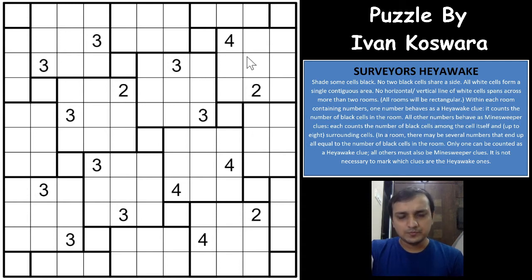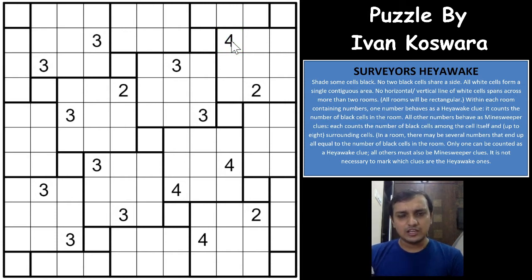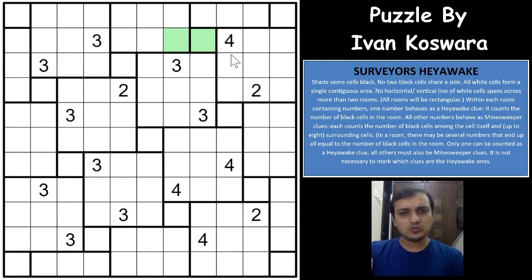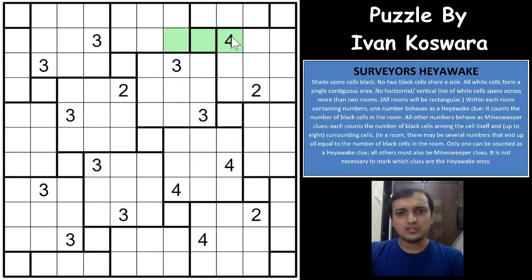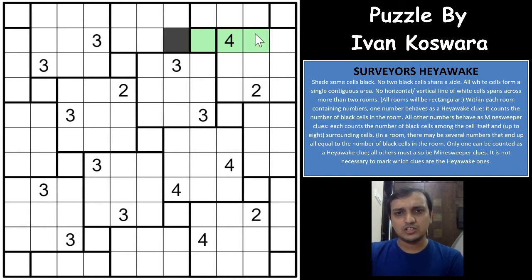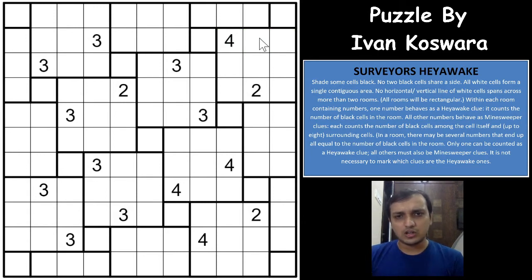According to the Heyawake rule, if a number is in the region, then those many cells should be shaded in that region in such a way that the white cells — the unshaded cells — cannot extend for more than 2 rooms. A region is called a room. So in a Heyawake puzzle, the unshaded cells cannot extend for more than 2 rooms. If you have one unshaded cell and a second unshaded cell in the 2nd room, then the cell in the 3rd room cannot be unshaded — it has to be shaded. In other words, white cells cannot extend beyond 2 thick borders.